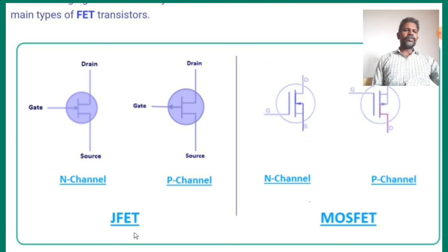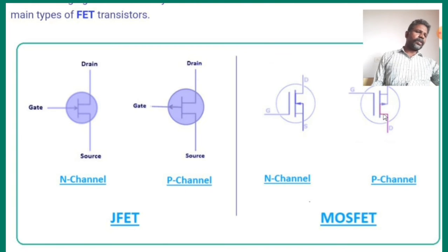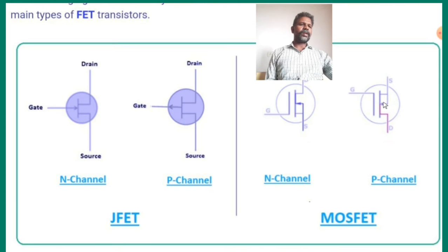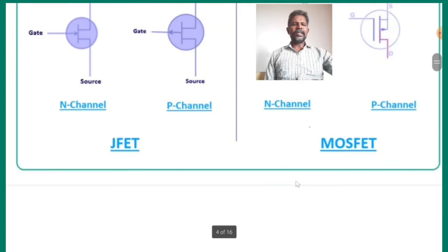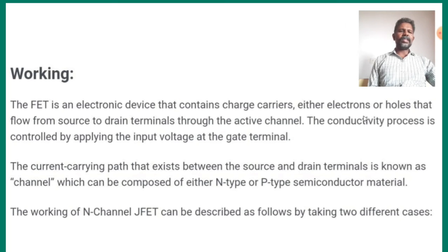Next, this is MOSFET. What is MOSFET? This is JFET and MOSFET. These are the two types of transistors. The MOSFET is an electronic device that contains charge carriers — either electrons or holes — that flow from source to drain.